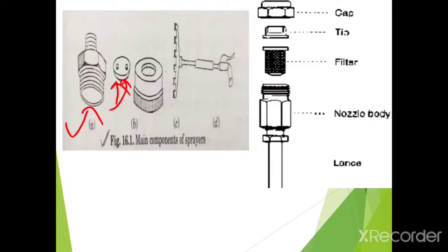The next component is the nozzle cap. It is the component which retains the assembled parts in or on a nozzle body. The nozzle disc or tip may be integral with the cap. The nozzle tip lies below the cap.